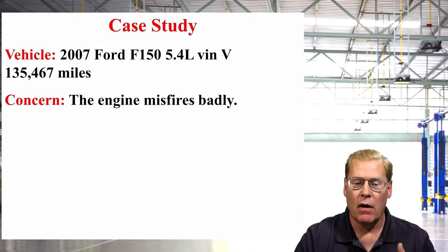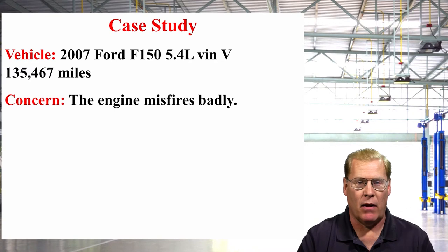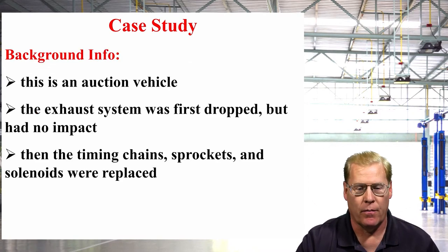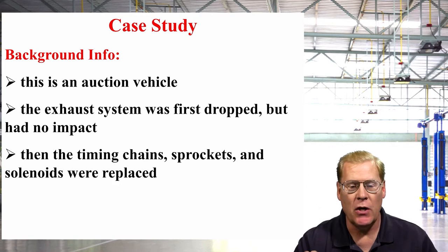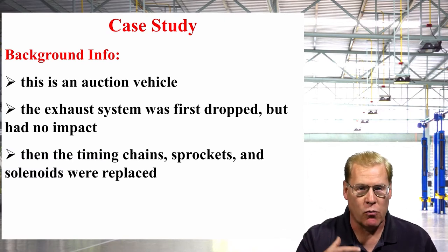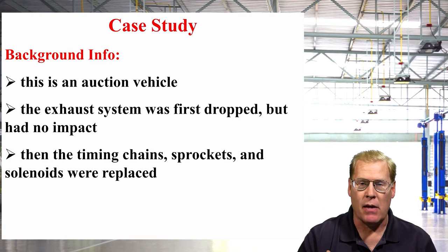We have a 2007 F-150 5.4 liter Vin-V 3-valve engine and the engine misfires very badly. Sometimes the engine will stall because it's running so poorly at idle. This is an auction vehicle, so we have really no history. When it first came in, it was running so poorly they thought it was a restricted exhaust, so they dropped the converter at the manifold, but it had no impact on the engine.